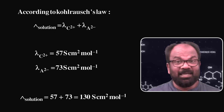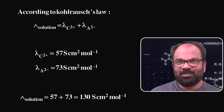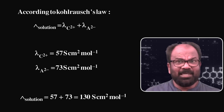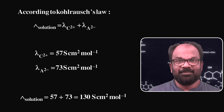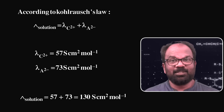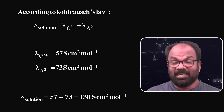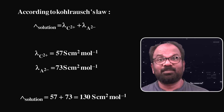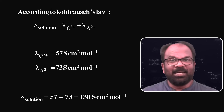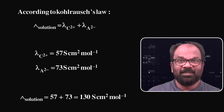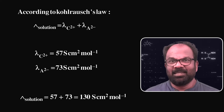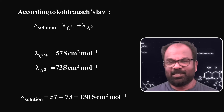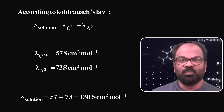λm of solution = λm of cation + λm of anion. Here λm of cation = 57 cm² mol⁻¹ and λm of anion = 73 cm² mol⁻¹. So λm of solution = 57 + 73 = 130 cm² mol⁻¹. The answer is option number 2.